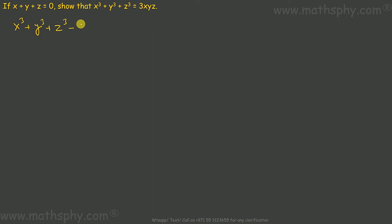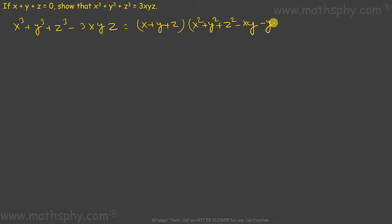We know that x cube plus y cube plus z cube minus 3xyz is equal to x plus y plus z, multiplied by the remaining factor. That's the identity here.